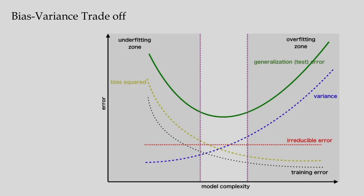Let us discuss the concept of bias and variance and how to consider the trade-off issue. In this figure I have shown the concept of bias and variance. In the x-axis, I have shown model complexity, and in the y-axis, I have shown the error. If I consider a very simple model on one side, and a very complex model on the other side, let us see what will happen in these two cases.